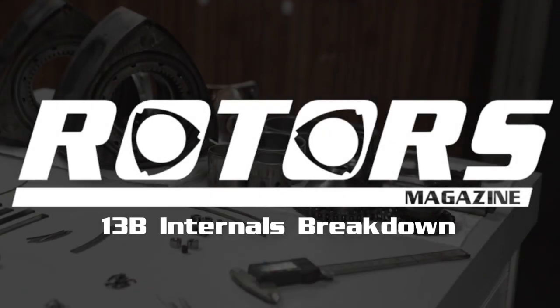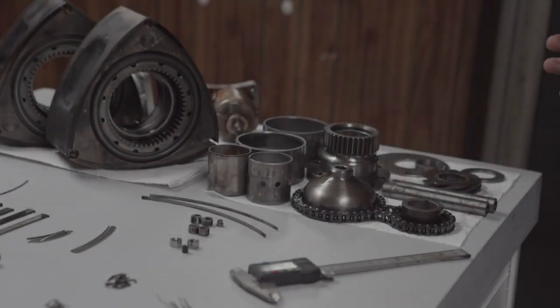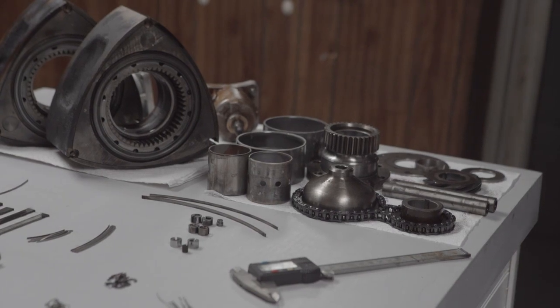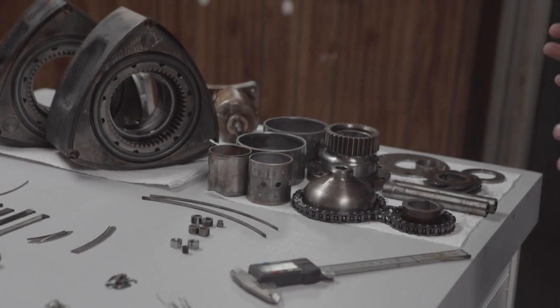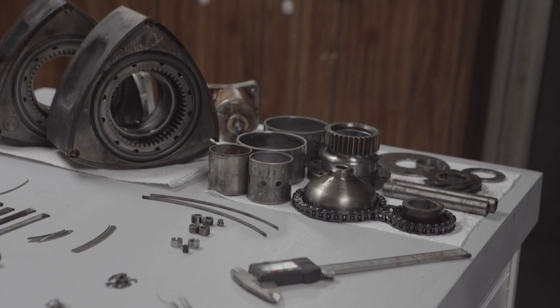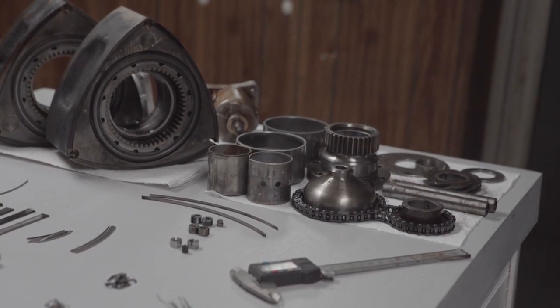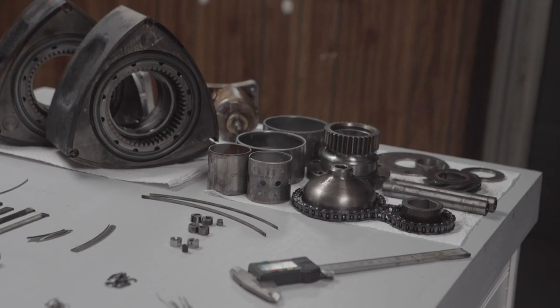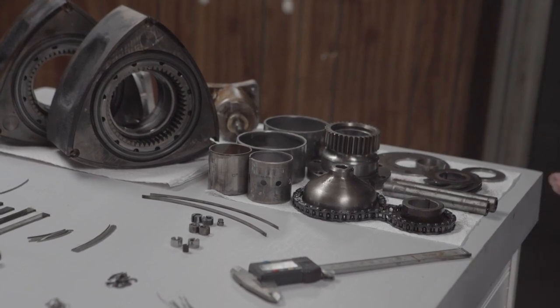Alright guys, welcome to another episode of Rotors, our how-to videos. Today we're going to give you an idea of everything that is internally inside of your rotary engine. If you've seen our last video of our tear down, a lot of these parts are directly from that engine, but I'm also going to compare some FC parts and RX-8 parts, whatever engine it is that you guys may be tearing down, give you an idea of what's in there.